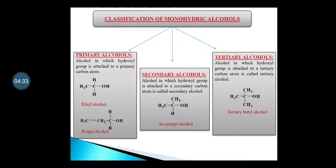We will study the classification of monohydric alcohols. Monohydric alcohols are classified as primary, secondary, and tertiary alcohols. This is a very important part. You must know the difference between primary, secondary and tertiary carbons, and then primary, secondary and tertiary alcohols. Alcohols in which the hydroxyl group is attached to a primary carbon atom are called primary alcohols.